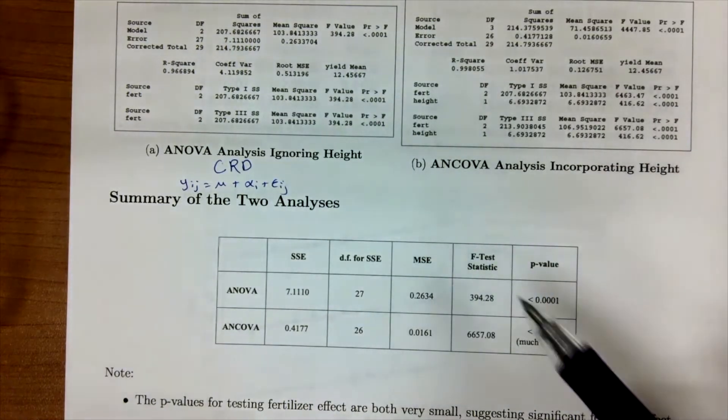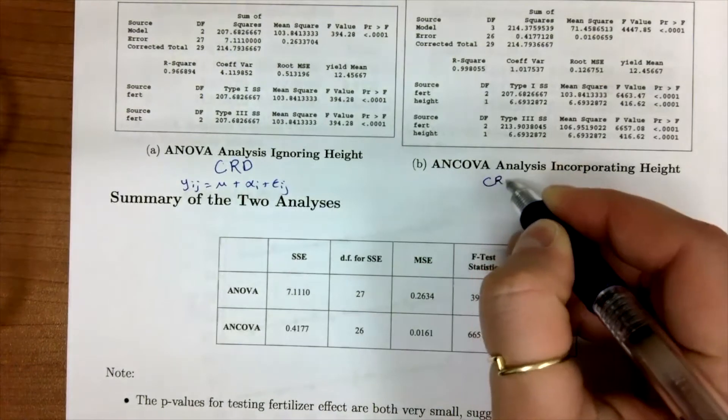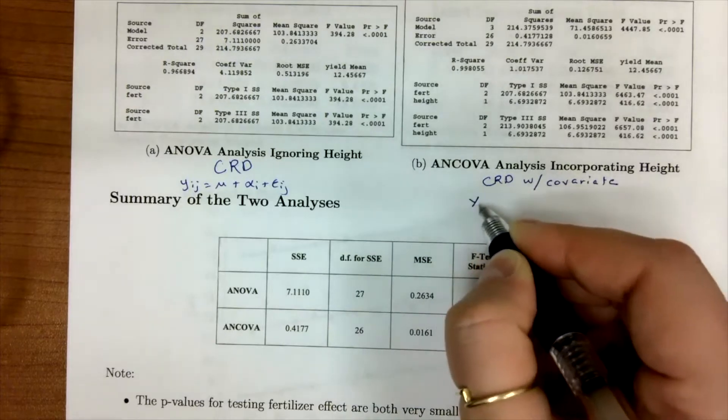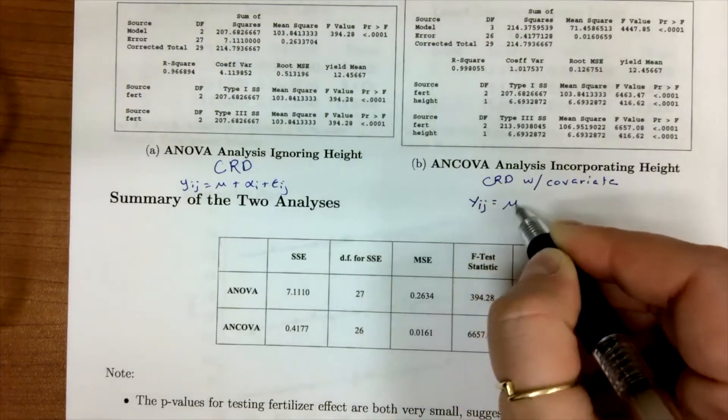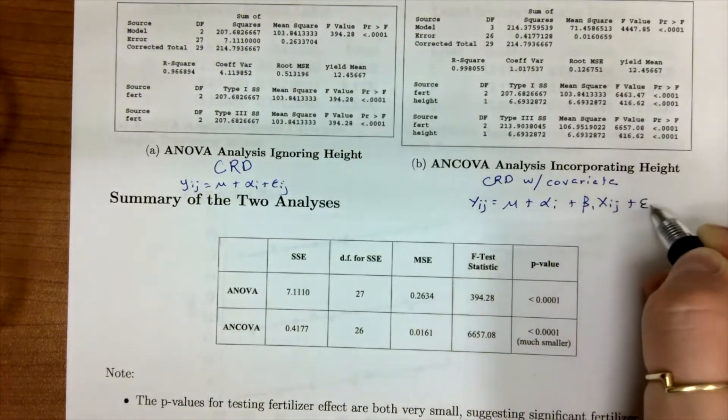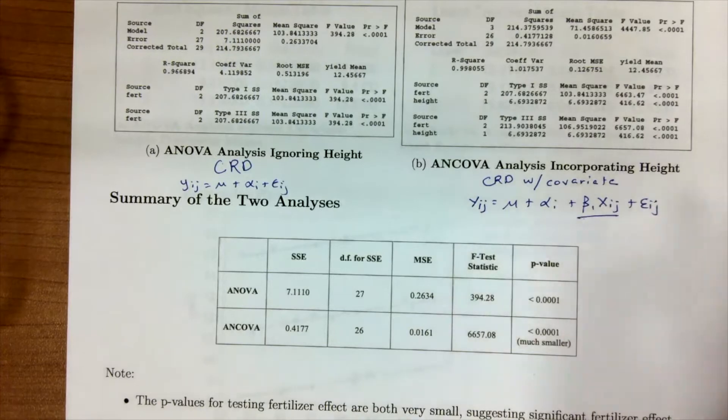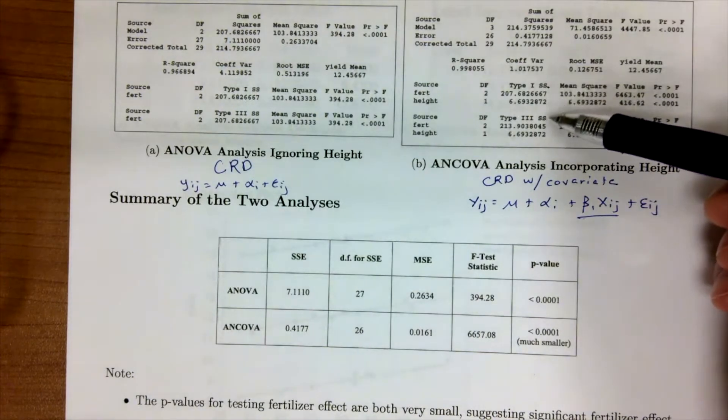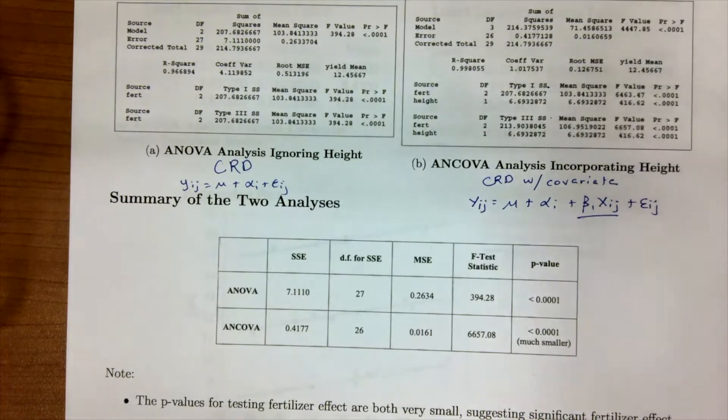This chart over here is when we are in a CRD with our covariate. Our height is now incorporated. Our model is that yij equals mu plus alpha i plus beta 1 xij plus epsilon ij. We're incorporating this back. Now, if we look at the type 1 sums of squares versus the type 3, we can notice that there's a difference. This is because when we introduce the idea of a covariate, we no longer have a balanced design.